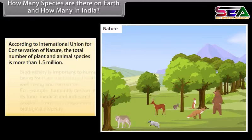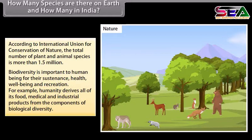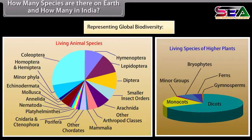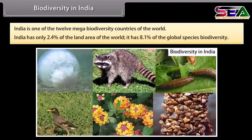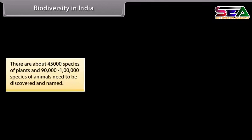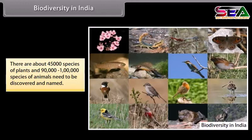Biodiversity is important to human beings for their sustenance, health, well-being, and recreation. Humanity derives all of its food, medical, and industrial products from the components of biological diversity. India is one of the 12 mega biodiversity countries of the world. Although India has only 2.4% of the world's land area, it holds 8.1% of global species biodiversity. There are about 45,000 species of plants and 90,000 to 1,000,000 species of animals yet to be discovered and named.